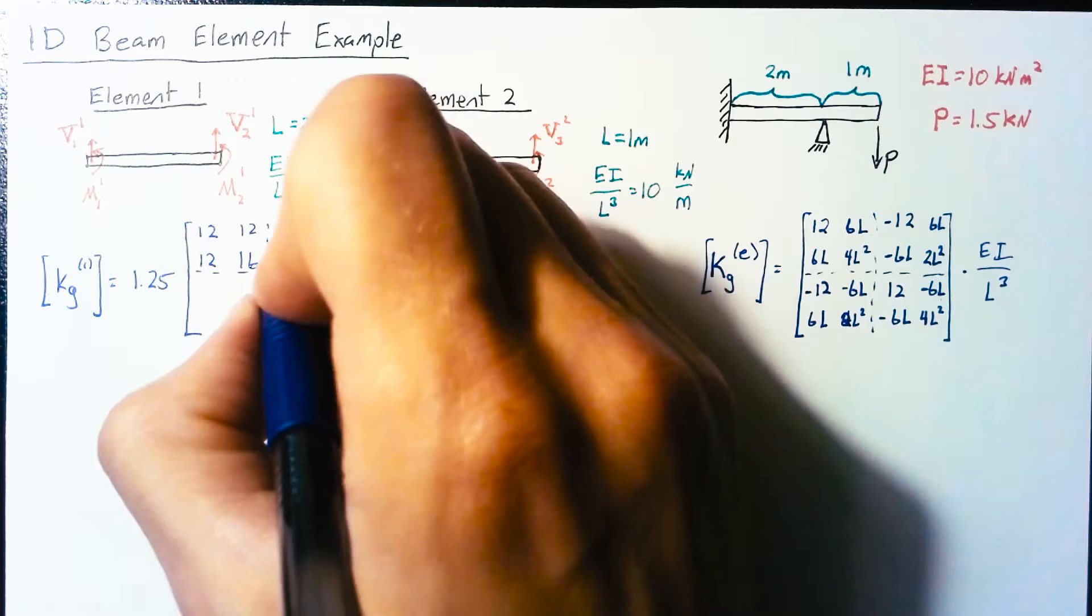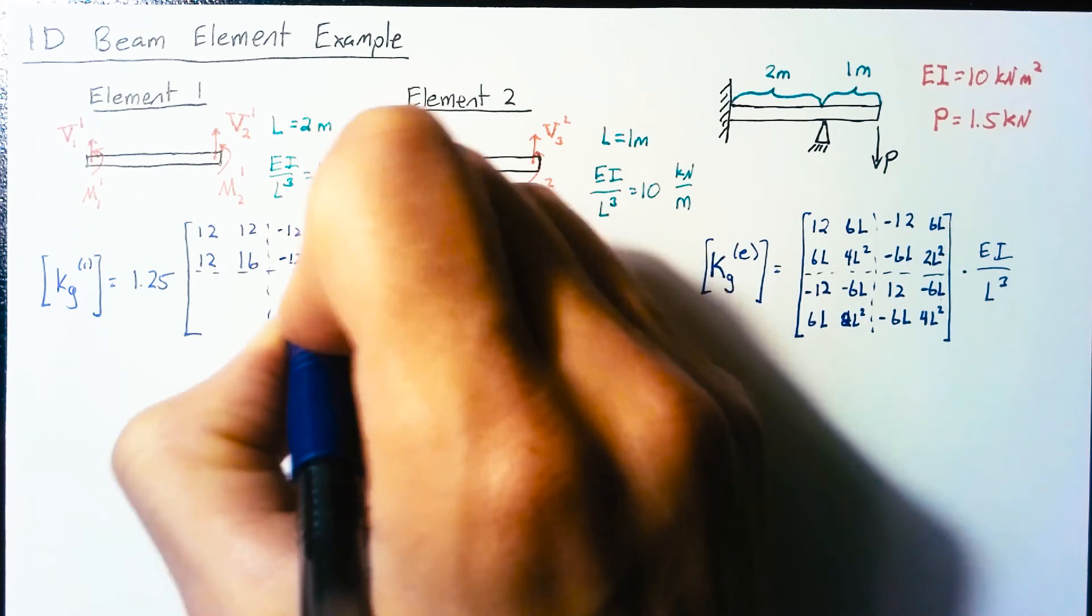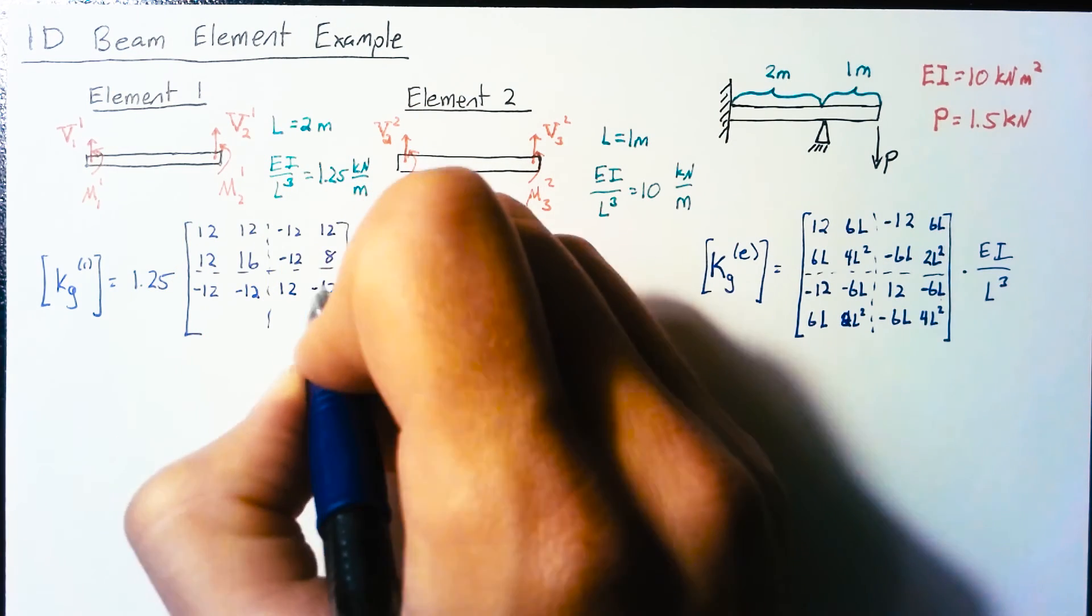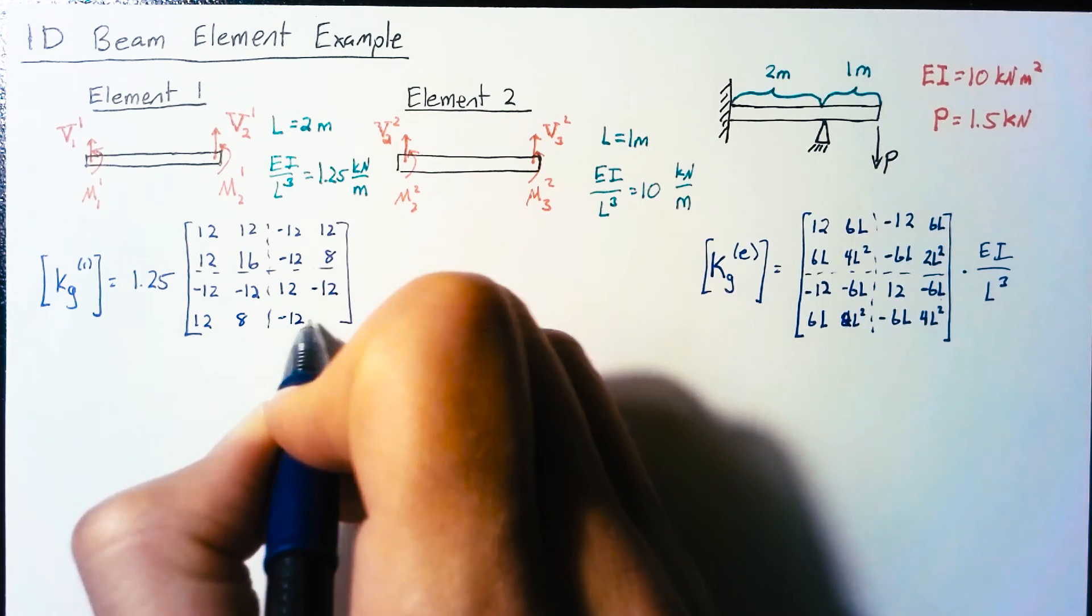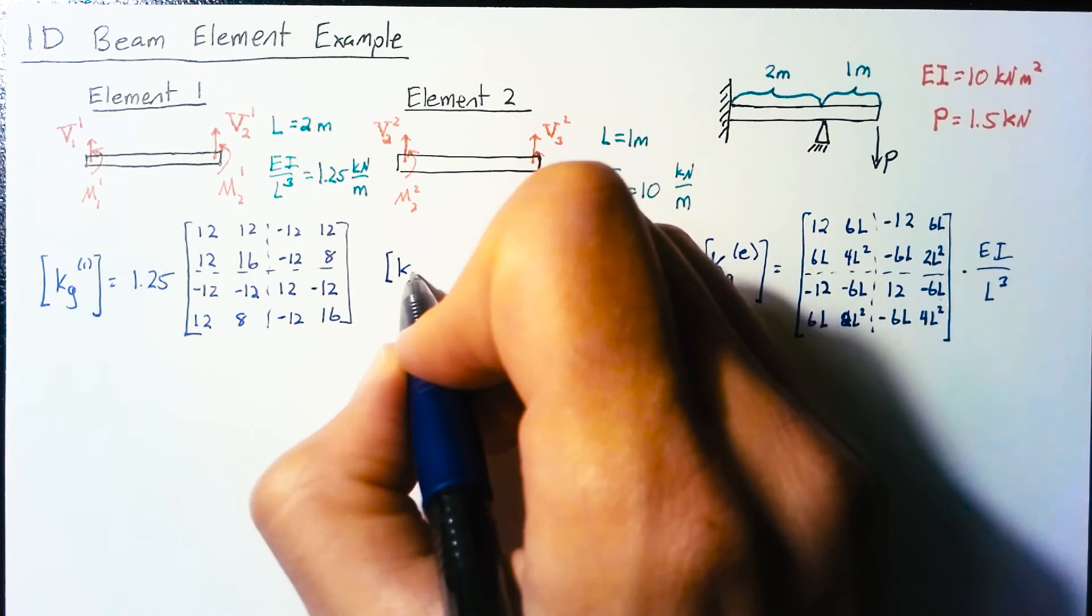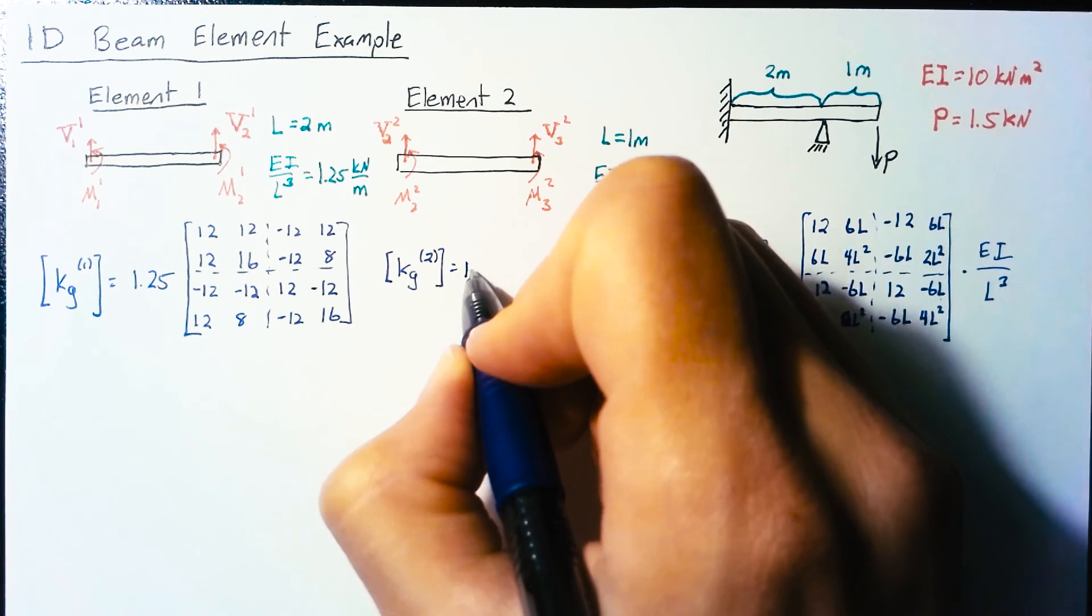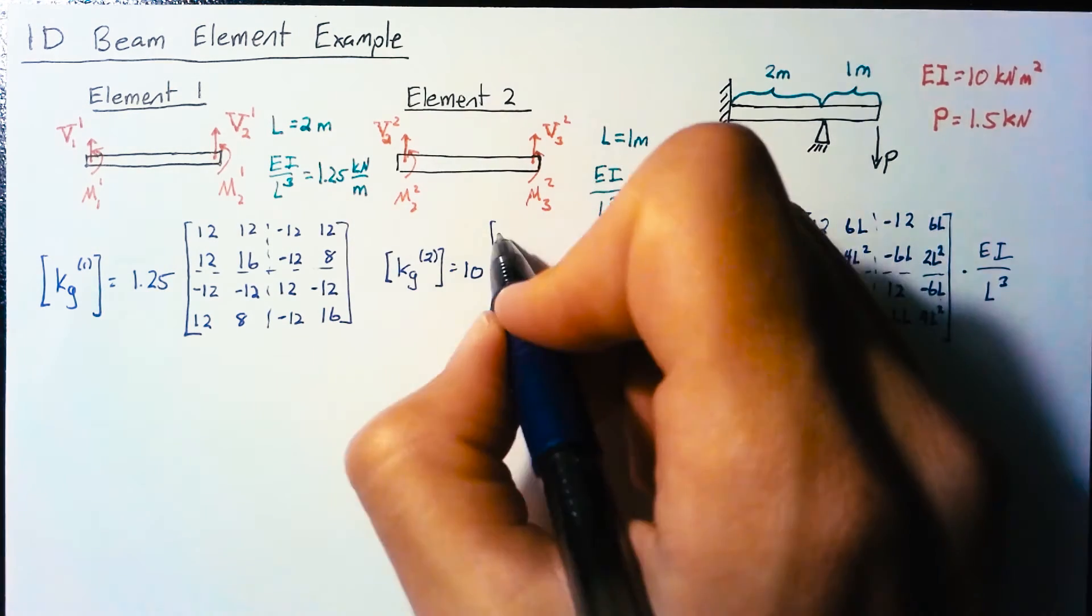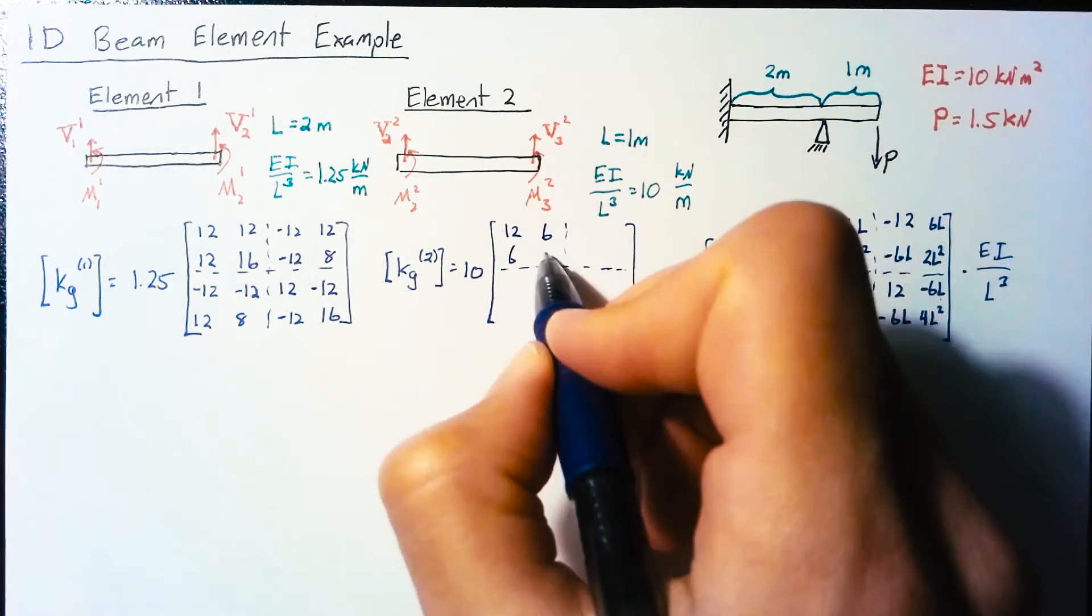For our second matrix, EI over L³ is 10 and all our L's are 1, so it's simple to copy this over.